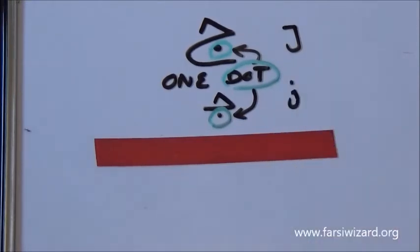Now, one way to remember it is because the small letter J in English has one dot on top of it. So, this letter in Farsi has one dot too, but this time, in the belly, or under it. That's the way to remember.